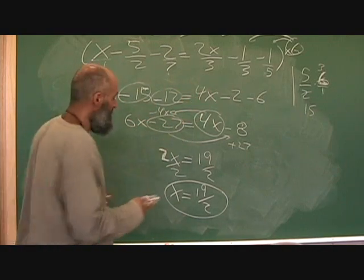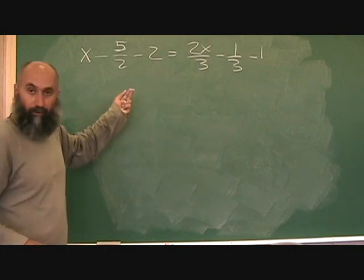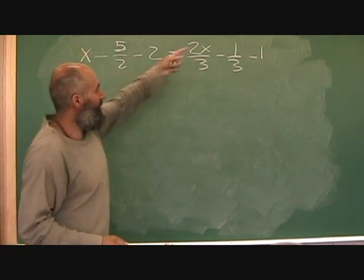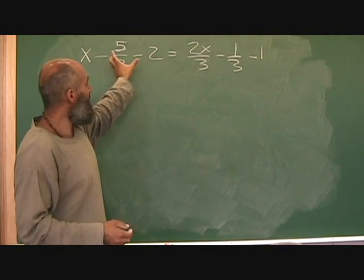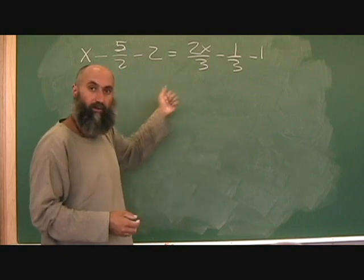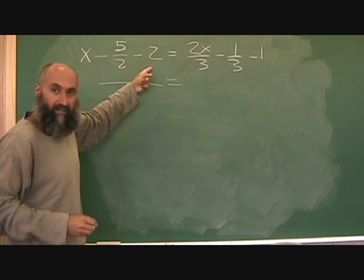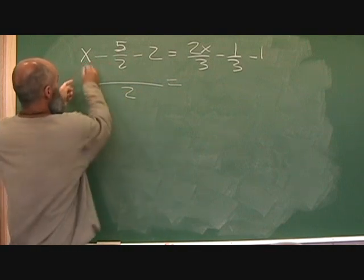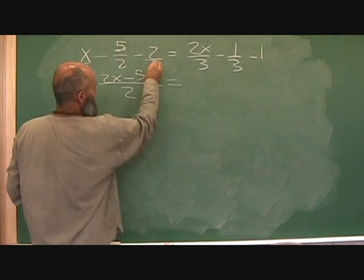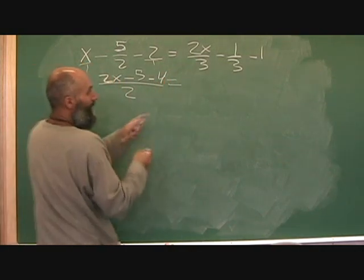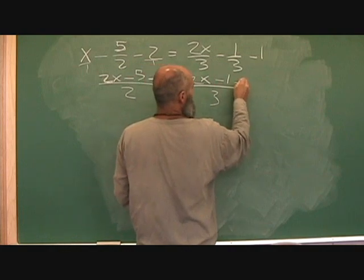Let's solve the same problem using cross multiplication. We've got the same problem. Instead of multiplying the whole thing by six, we're going to combine everything on one side into one term and everything on the other side into one term, then cross multiply. The common denominator on this side of the equation is two. That's over one, over one - multiply by two, so that becomes two x. Minus four. On this side, the common denominator is three, so that becomes two x minus one, minus three.